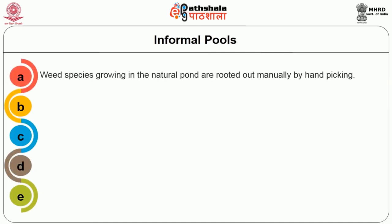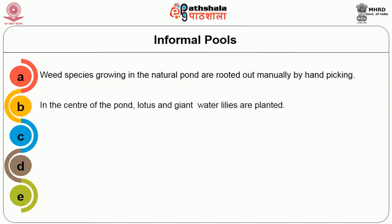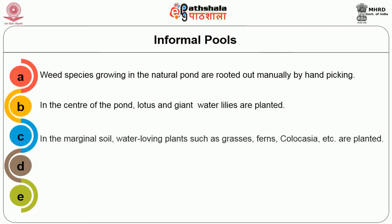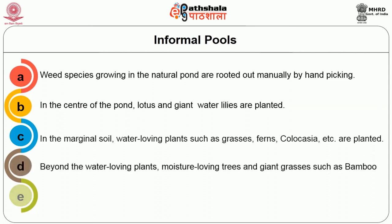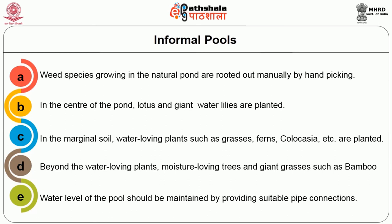Weed species growing in the natural pond are rooted out manually by hand picking. In the centre of the pond, lotus and giant water lilies are planted. In the marginal soil, water-loving plants such as grasses, ferns and colocasia are planted. Beyond the water-loving plants, moisture-loving trees and giant grasses such as bamboo are also planted. The water level of the pool should be maintained by providing suitable pipe connections.